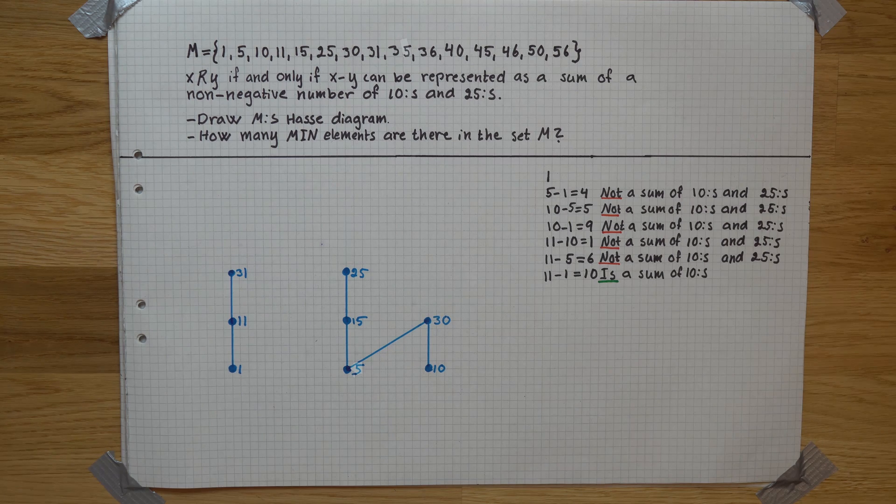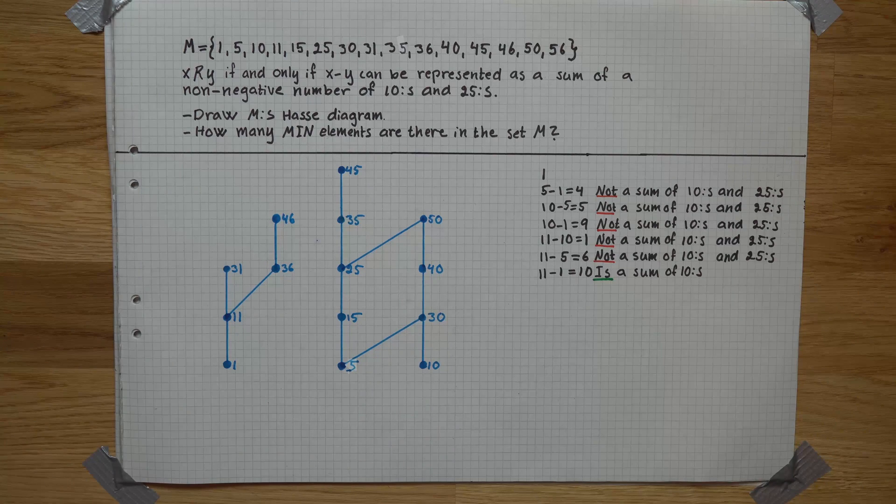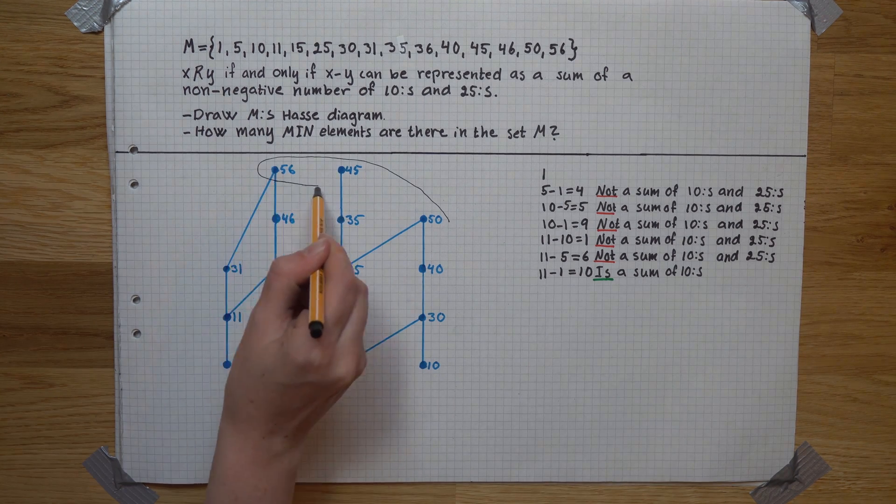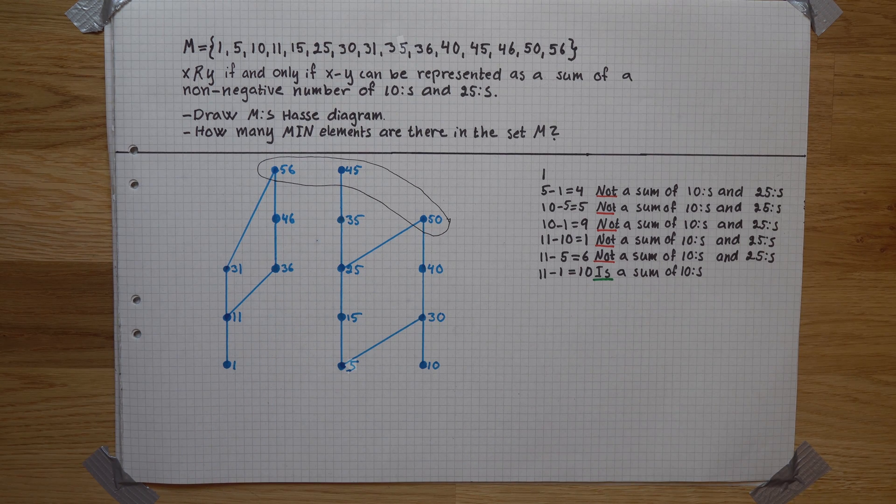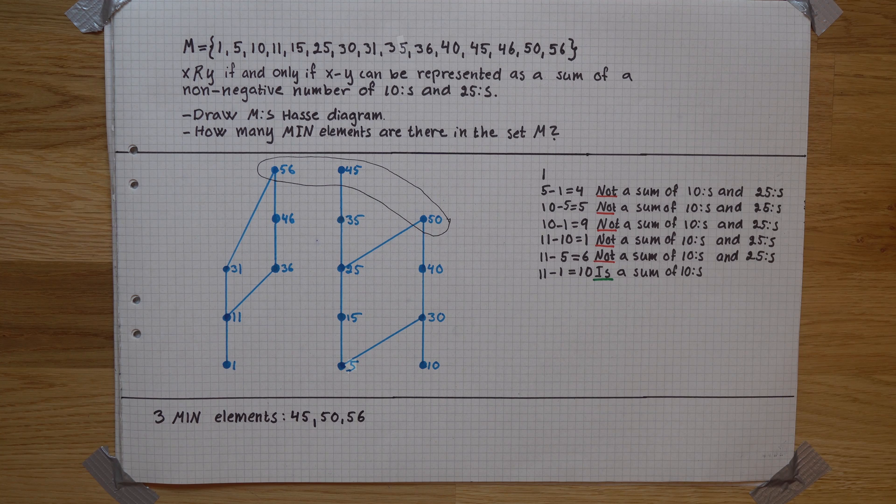As we work our way through the numbers in the set, we will eventually end up with our Hasse diagram. The minimal elements are the ones in the top here: 45, 50, and 56.